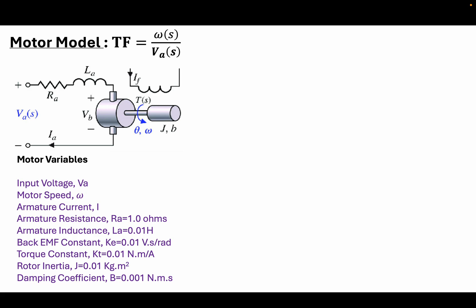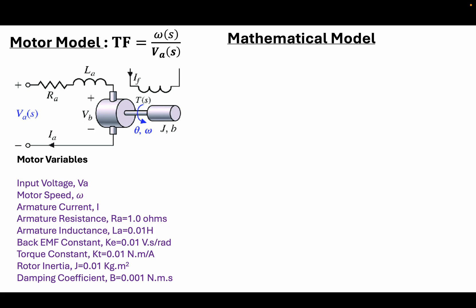Before we jump to Simulink and see the implementation of the block diagram of the motor model, let us go through the mathematical modeling. We are going to develop a transfer function model that relates the motor speed with the applied input voltage. Here is the diagram that illustrates how the input voltage is electromechanically related to the speed of the motor. Here are the motor variables as well as the values we are going to use for our example.